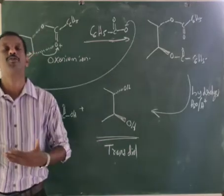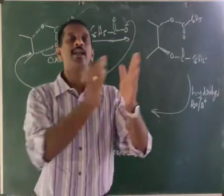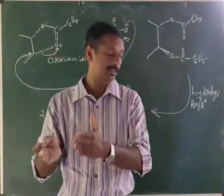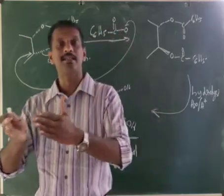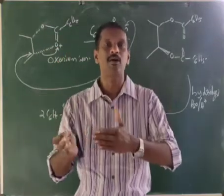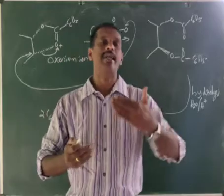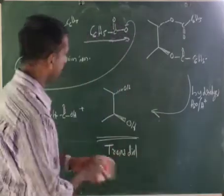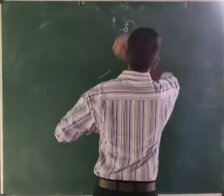This is the mechanism of Prevost hydroxylation. In summary: Woodward and Prevost both use alkene + I2 + silver acetate or silver benzoate. In Woodward, the solvent is water → cis diol. In Prevost, dry CCl4 is used → trans diol.